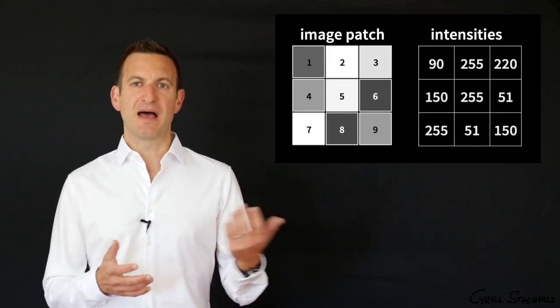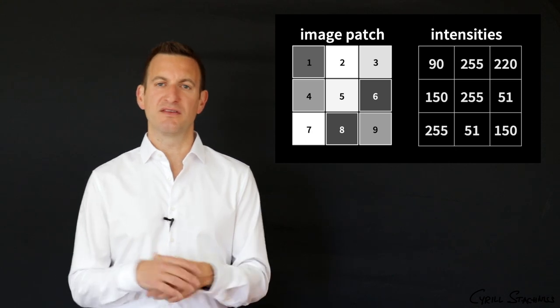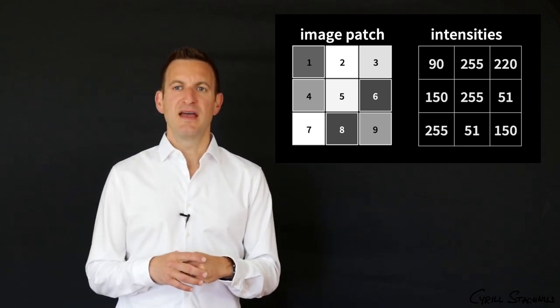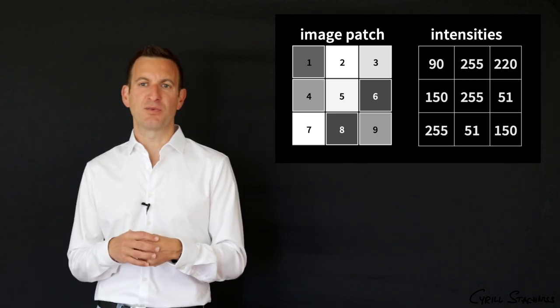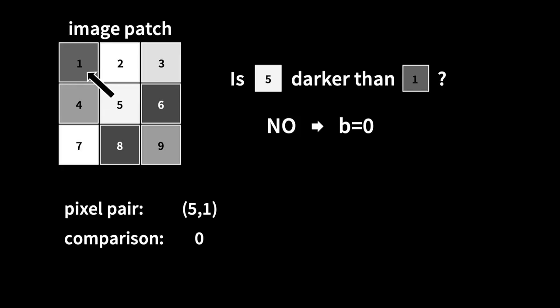So let's have a small example, this local patch of 9 pixels, and then we can compare pixels with each other. So if we sample, for example, pixel number 5 and pixel number 1, we compare the pixel in the center with the top left pixel. Then we see that the one in the center is brighter than the one on the top left, and therefore the comparison would return a 0. Same holds for 5 and 9 and 4 and 6.